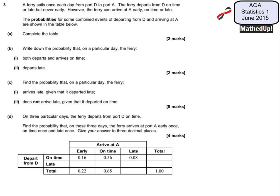Number 3 from the AQA Statistics 1 June 2015 exam paper. In this question we're told that a ferry sails once each day from port D to port A. The ferry departs from D on time or late but never early. However, the ferry can arrive at A early, on time or late. The probabilities for the combined events of departing from D and arriving at A are shown in this table here. Our first task is to complete the table.